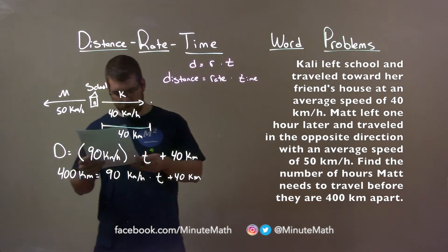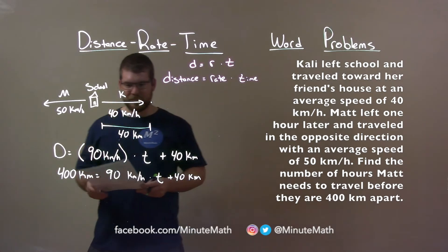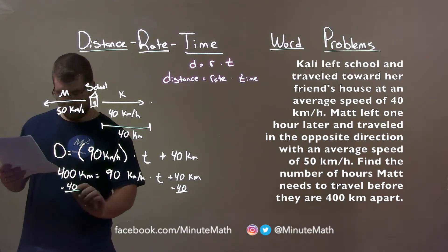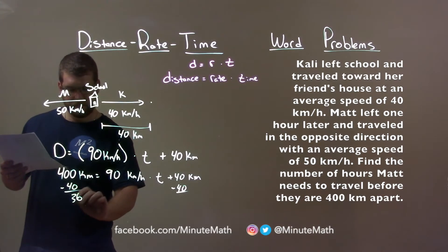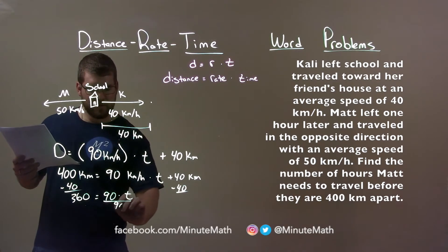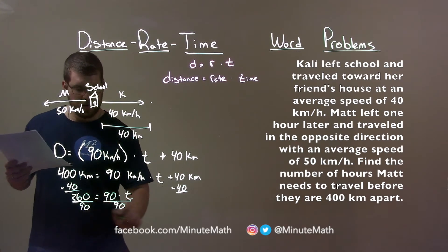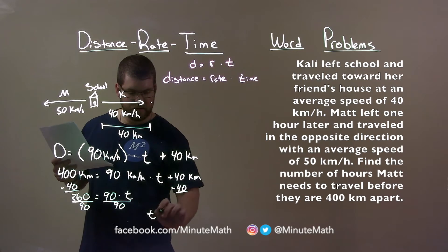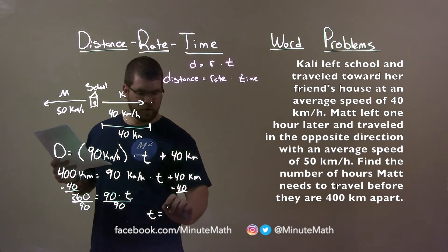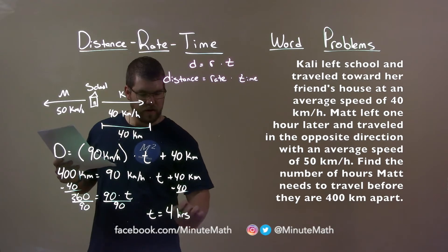So now let's go solve for T. We subtract 40 to both sides. We're left with 360 equals 90 times T, divide both sides by 90, and we're left with, I'll put it here, T by itself, 360 divided by 90 is 4, so 4 hours. And so it will take Matt four hours of driving until Cali and Matt are 400 kilometers apart.